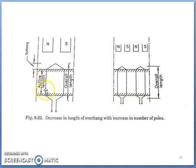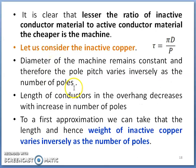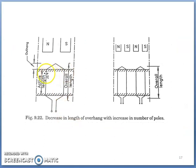The conductor which is exactly placed in the slot and which takes active part in energy conversion is active copper. The copper used in the overhang, just to make the connection between two conductors beyond the active length, is called inactive copper. This ratio of inactive conductor material to active conductor material will decide the cost of the machine, and depending upon the number of poles used in the design, this overhang and inactive copper material requirement will change.